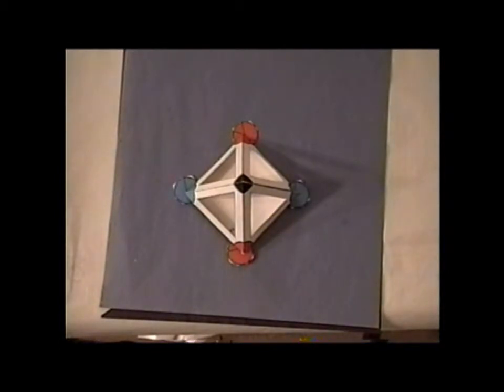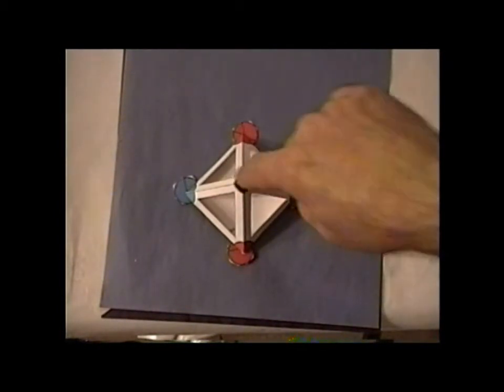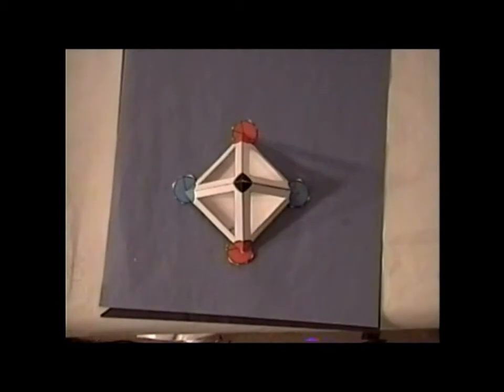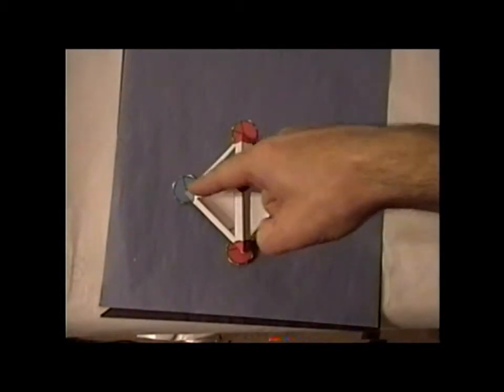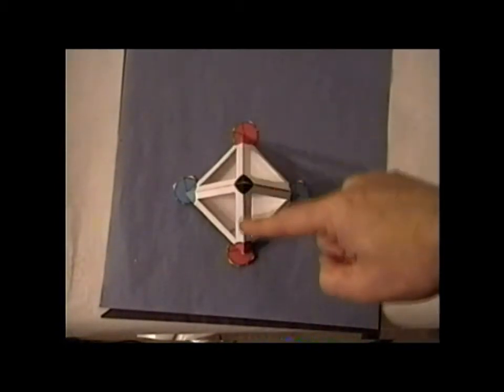It turns out that this belongs to the group C2V. The high order rotation axis comes through here, from the peak through the base. We have two mirror planes. One mirror plane goes along here, and the second vertical mirror goes along this direction.